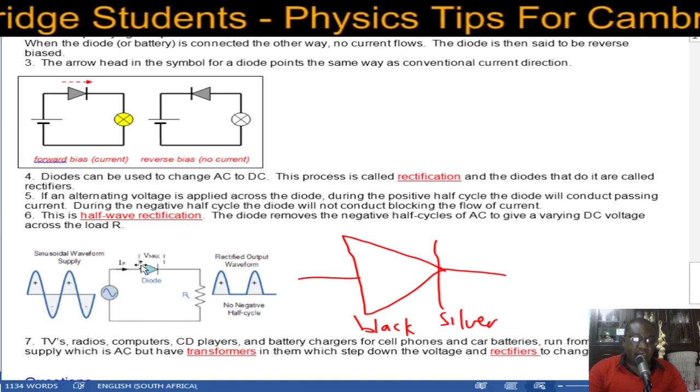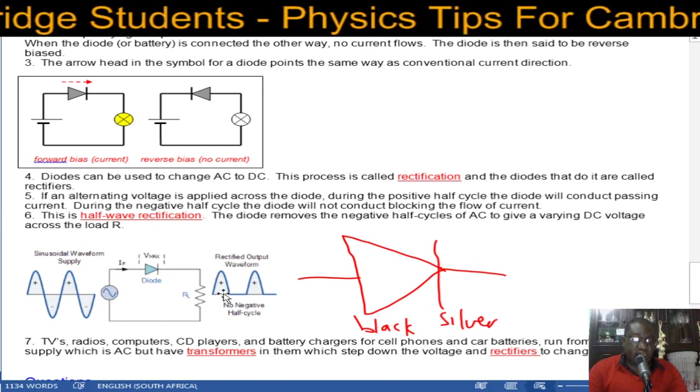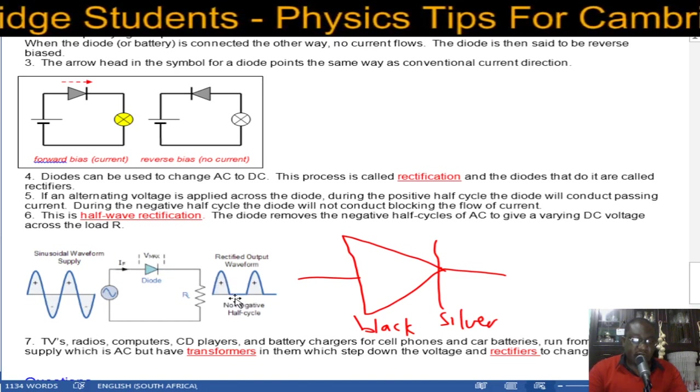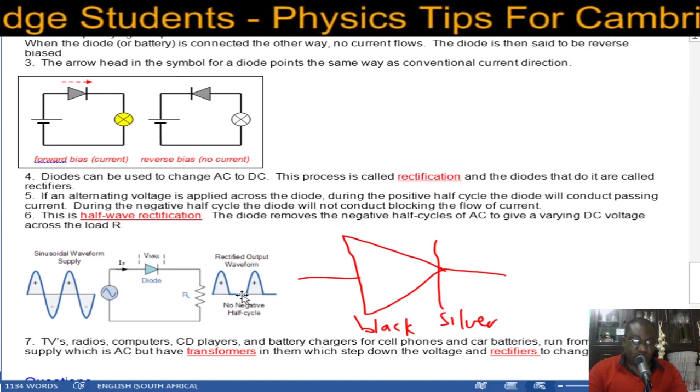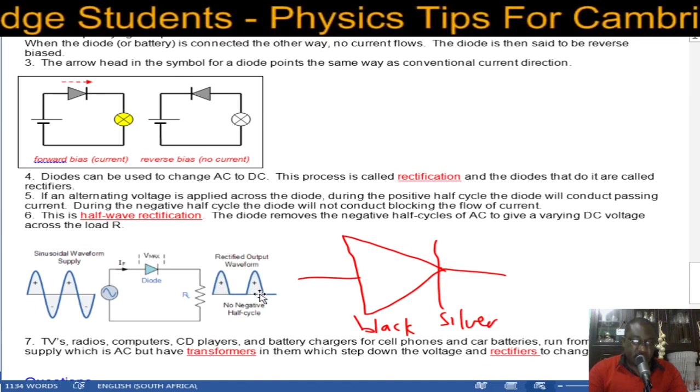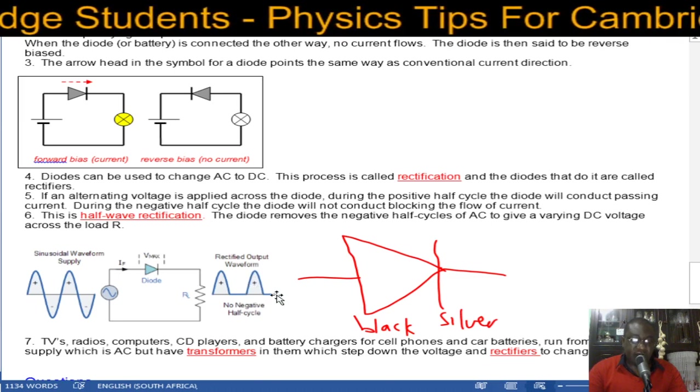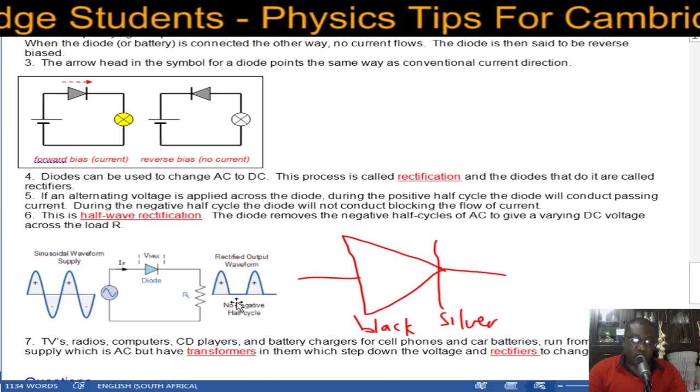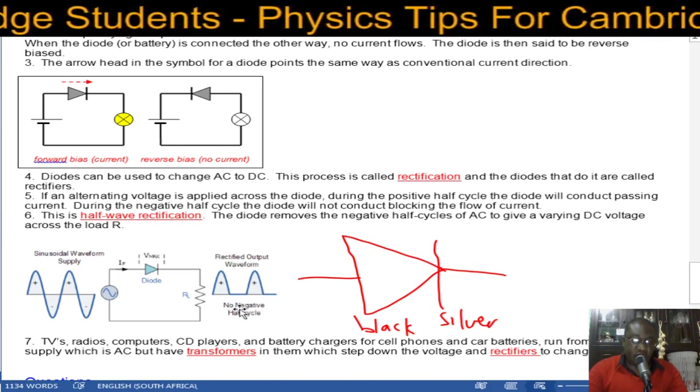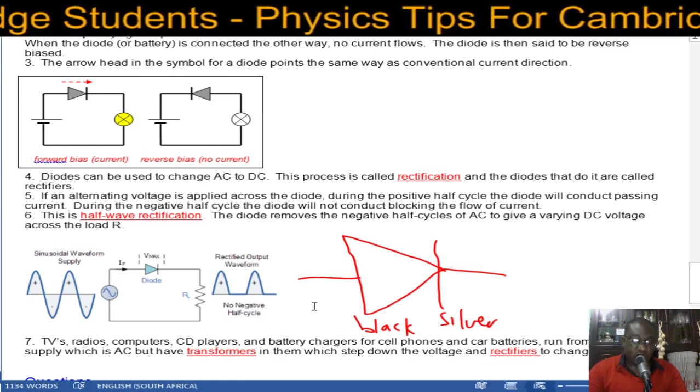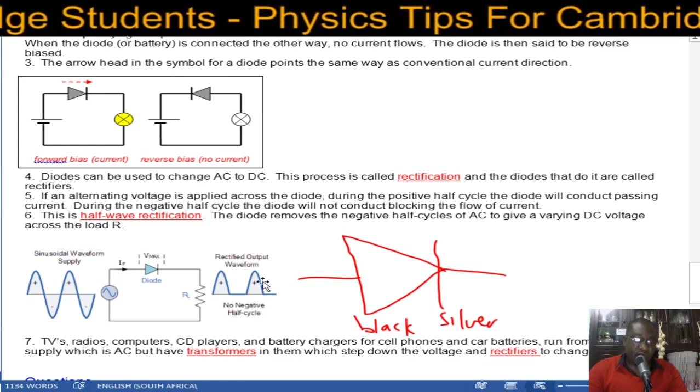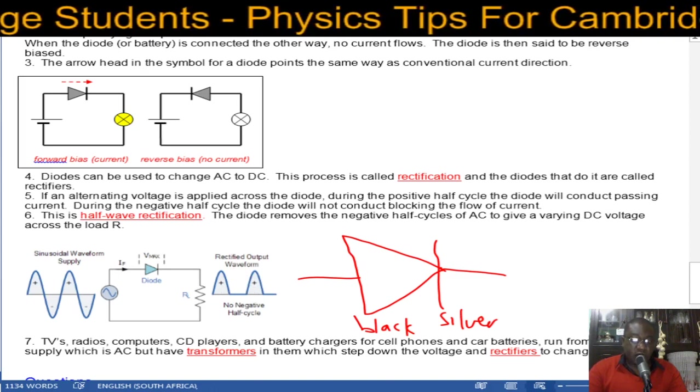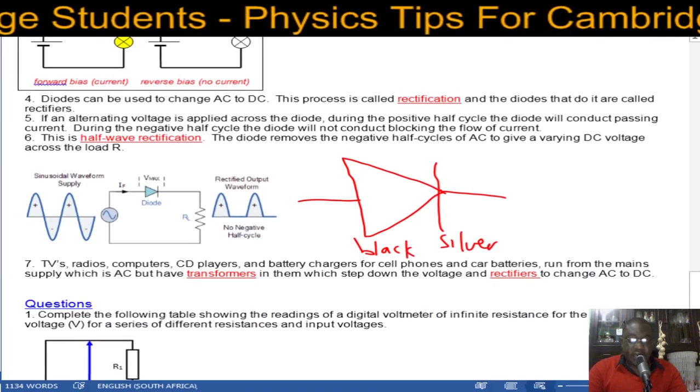Every half cycle the current changes direction. When it passes through the diode it changes because for the first part it is conducting, the second part is now reverse biased so it won't be conducting. Then the third it will be conducting, fourth it won't be conducting, and so forth. So effectively we have blocked whatever was in the negative. The negative half cycle will be blocked throughout and you only remain with the positive side. So what we have created there is a direct current signal.